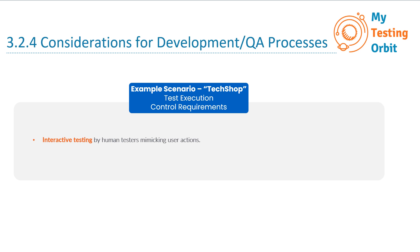The first one is interactive test execution by human testers mimicking user actions. In this scenario, you as a tester simulate the actions of a user. You visit the website and add items to the shopping cart, proceed to checkout and make a purchase. You observe how the website responds to each step, ensuring that everything works as expected.